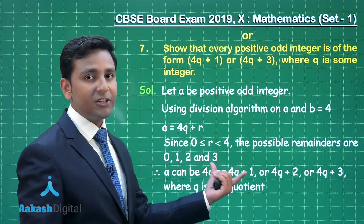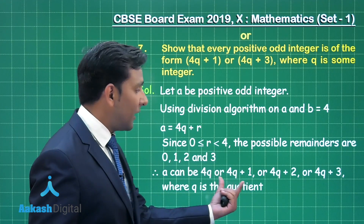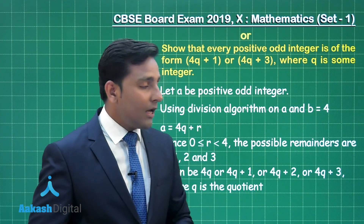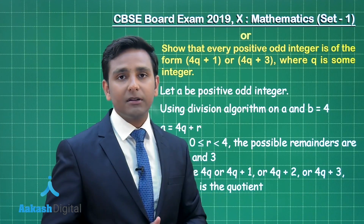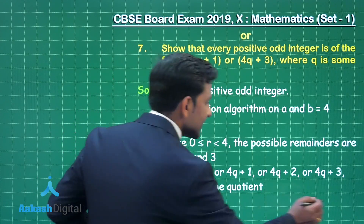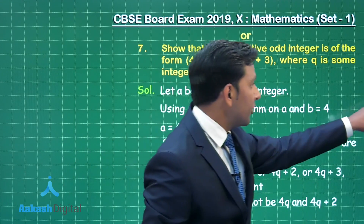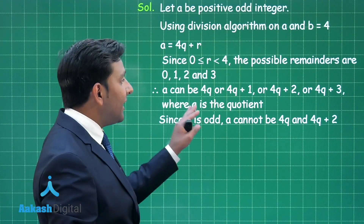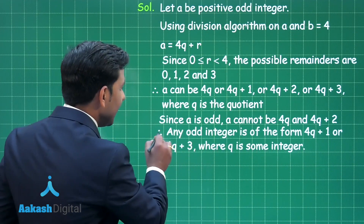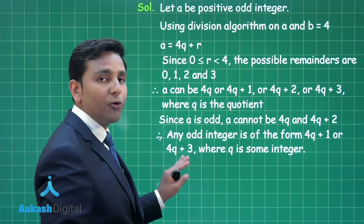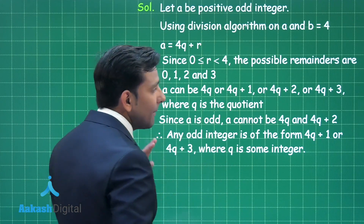The possible values of R are 0, 1, 2, and 3, giving possible values of A as 4Q, 4Q plus 1, 4Q plus 2, or 4Q plus 3. Since 4Q and 4Q plus 2 are divisible by 2, they are even. Since A is odd, A cannot equal 4Q or 4Q plus 2, so any odd integer must be of the form 4Q plus 1 or 4Q plus 3.